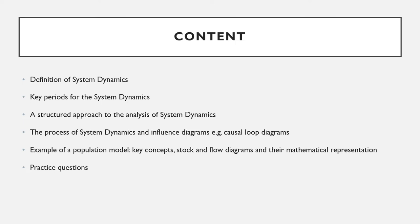Finally, this module will show you practical examples of definitions of flow variables, stocks, and parameters. At the end of this module, you will have a good command of system dynamics theory, including its history and definition. You will also have a good knowledge of key concepts of the dynamics of the system, including causal loop diagrams, diagram of flows, and stocks. You will also be able to specify whether a macroeconomic or social demographic variable is a flow or a stock variable.